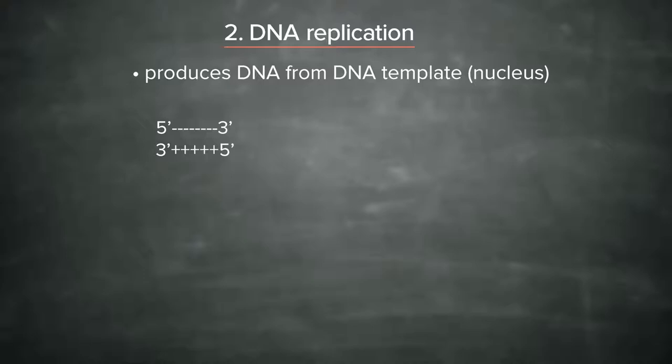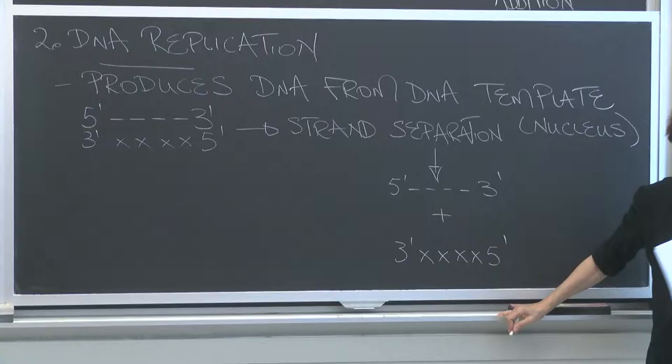DNA is replicated, firstly, by separating the strands. So a process of strand separation leads to two strands, the top one 5' to 3', plus the bottom one that goes 3' to 5'.